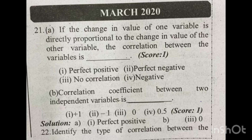If the change in the value of one variable is directly proportional to the change in the value of the other variable — for example, if a 10% increase in one variable always corresponds to the same proportional change in the other — we say there is perfect positive correlation. If you are confused, use the correct term: perfect positive correlation.